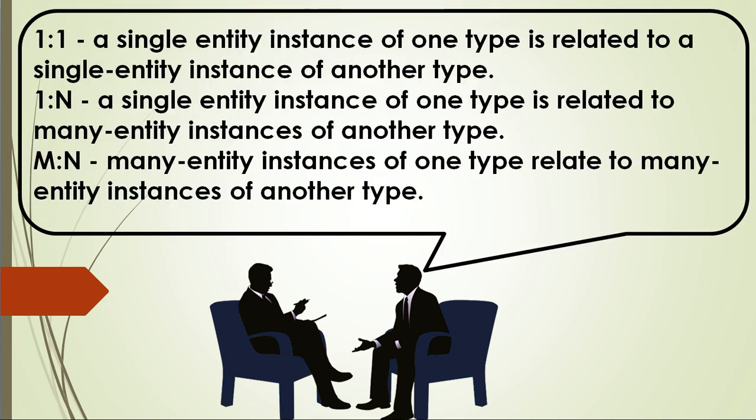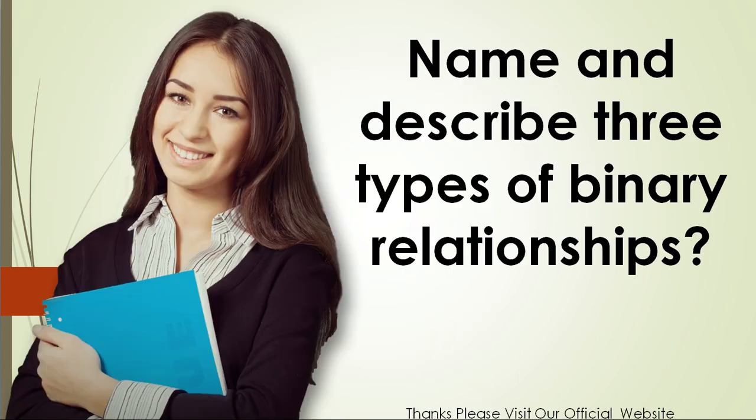1:1 — a single entity instance of one type is related to a single entity instance of another type. 1:N — a single entity instance of one type is related to many entity instances of another type. M:N — many entity instances of one type are related to many entity instances of another type.